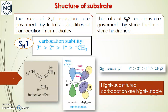First, we will discuss structure of substrate. The reaction rate of SN1 depends on the stability of the intermediate, which is the carbocation. In SN2, the factor governing reaction rate is the steric factor, because backside attack takes place in SN2. Now let us discuss the SN1 case — reaction rate depends on the stability of the carbocation.